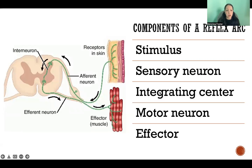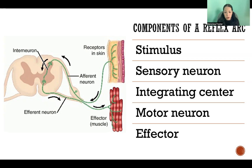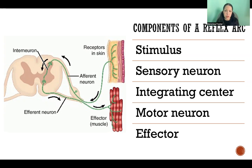We start with the stimulus that triggers the reflex. That information is carried via a sensory neuron to an integrating center in the central nervous system. There, the information is relayed to a motor neuron that carries the information about the response we want to have to that stimulus. That information is carried to the effector, which is the actual structure that does the responding — it's always muscles or glands.